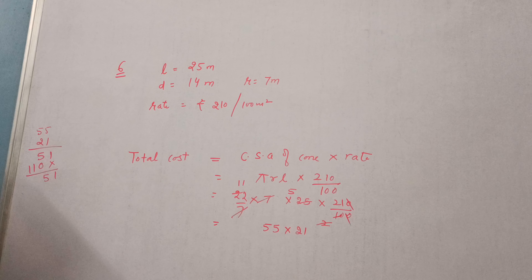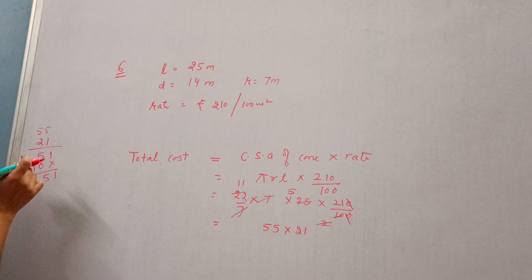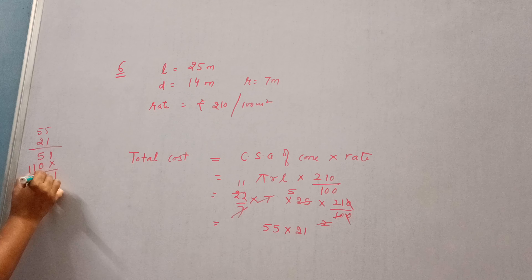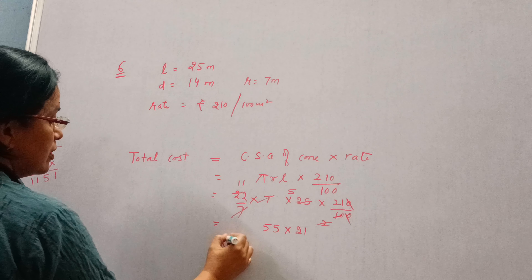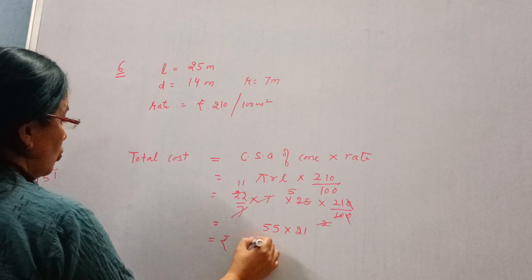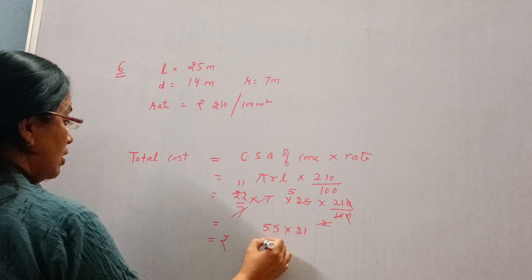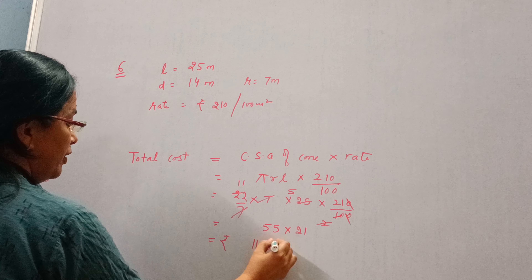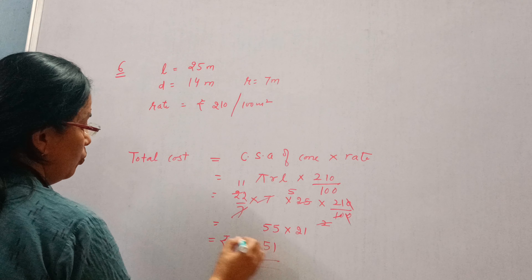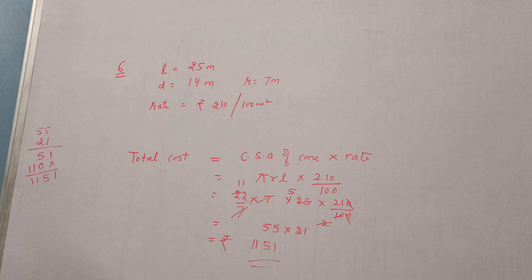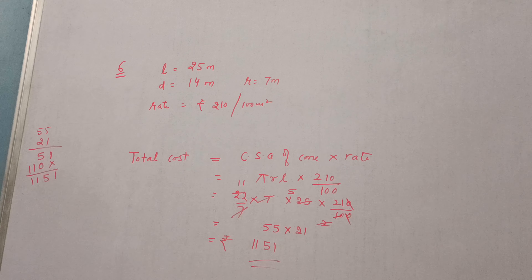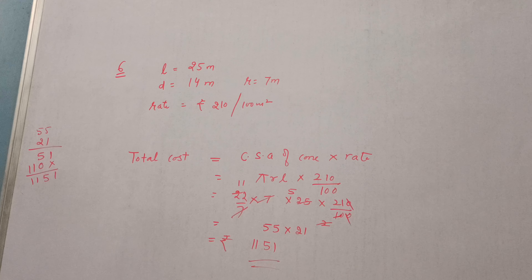Cut 7 by 7. Then 5 into 5 is 25, 5 into 10 is 2, giving 11. So 55 into 21 — simply multiply 55 by 21.